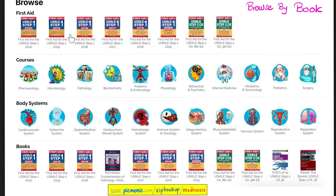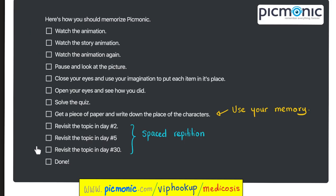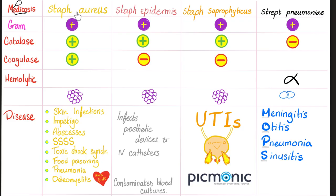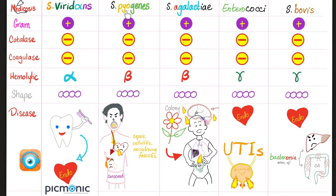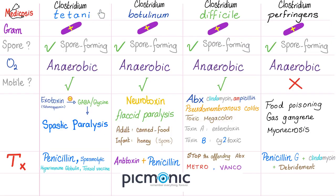Picmonic lets you browse by your favorite book, discipline, or system. They make a fresh quiz for you every day and you can create a study schedule. Spaced repetition is key — you remember better when you use more than one modality. Previous videos covered Staph aureus, Staph epidermidis, Staph saprophyticus, Strep pneumo, viridans, pyogenes, agalactiae, Enterococci, Bovis, Actinomyces israelii, Listeria, Corynebacterium diphtheriae, Nocardia, and all the Clostridia.